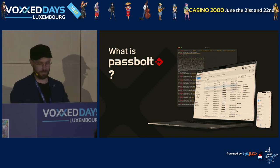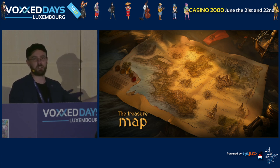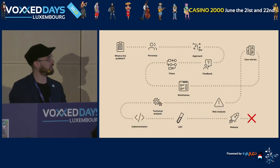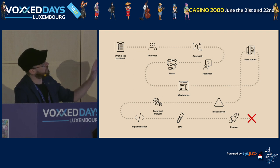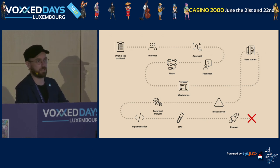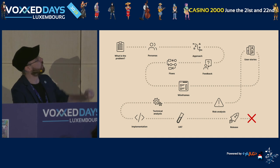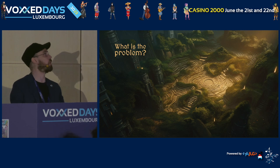For our treasure hunt, we of course need something called a treasure map to guide us through the whole process. This is how it looks for us — it's not just for this presentation. All those steps you see we use for releasing any new feature. That X over there is actually a new feature that gets released once we've been through the whole process. We'll begin with the very first step: what is the problem?